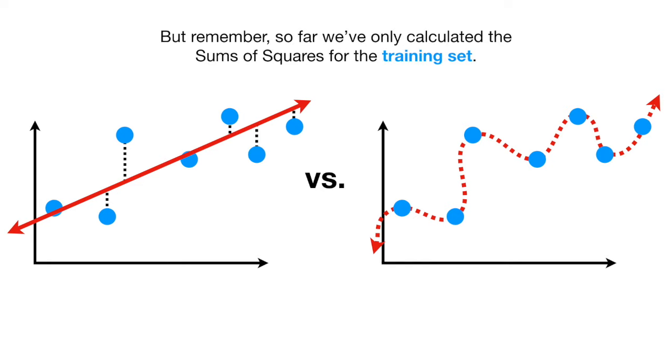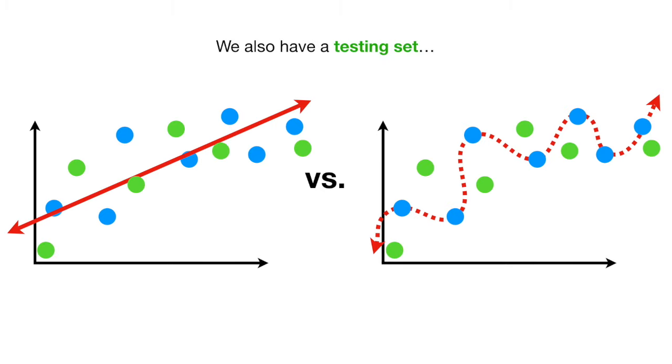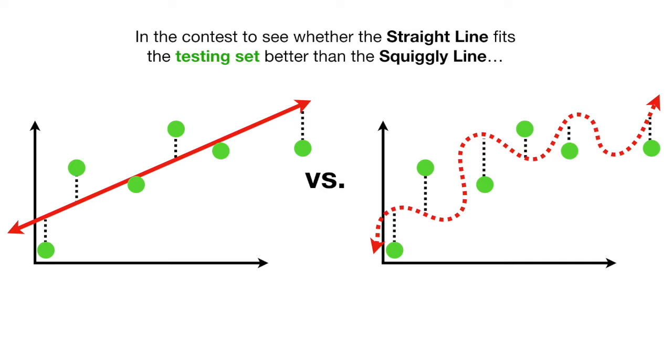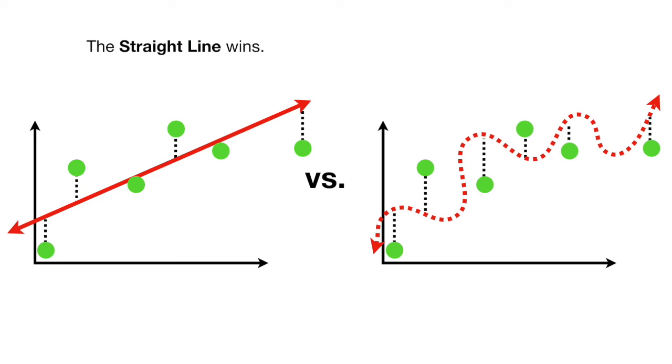But remember, so far we've only calculated the sums of squares for the training set. We also have a testing set. Now let's calculate the sums of squares for the testing set. In the contest to see whether the straight line fits the testing set better than the squiggly line, the straight line wins.